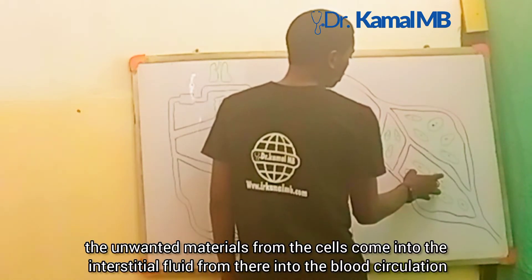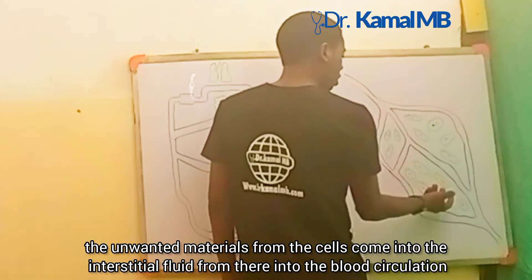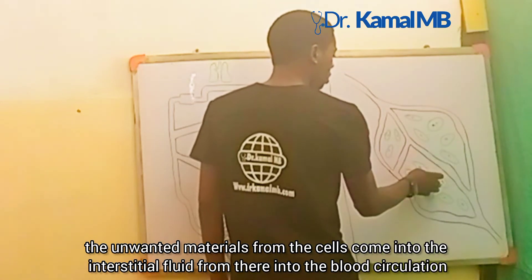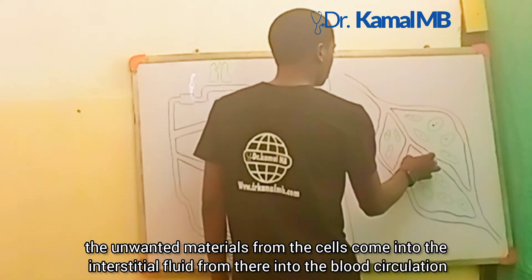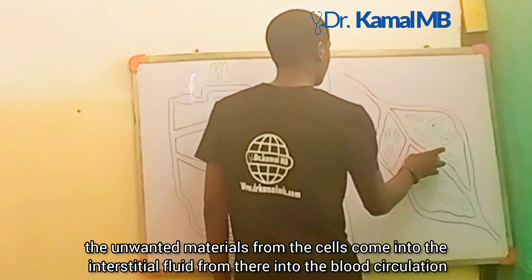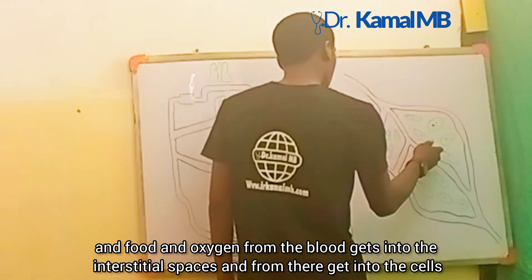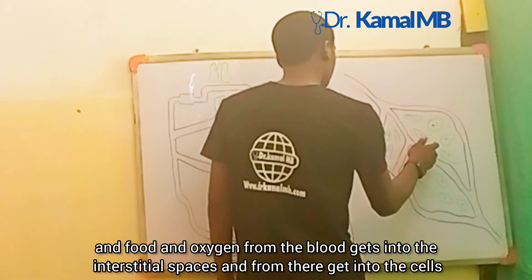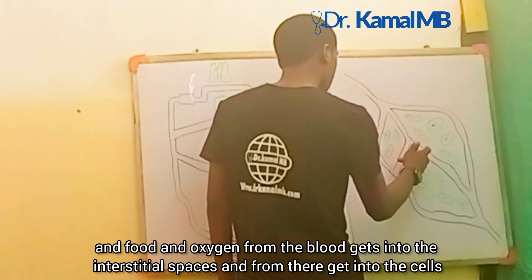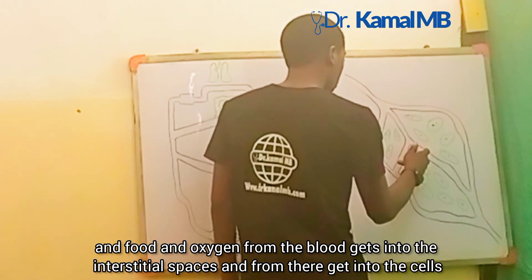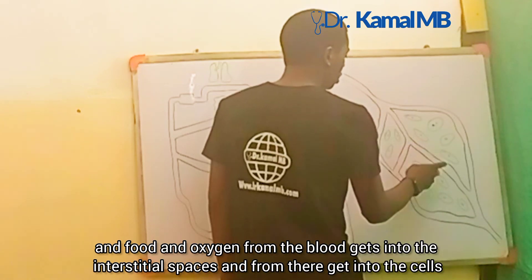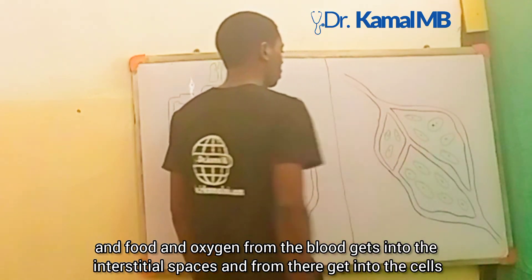The unwanted materials from the cells get into the interstitial spaces, from there into the blood circulation. Good materials like food and oxygen get from the blood into the interstitial space, and from the interstitial space into the cells.